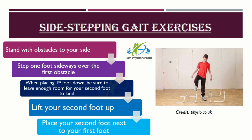Here's how to perform side-stepping gait exercises. Stand with obstacles to the side. Step one foot sideways over the first obstacle, being sure to raise your knee up high. When placing the first foot down on the other side of the obstacle, be sure to leave enough room for the second foot to land. Lift the second foot up with a high knee and place the second foot next to the first foot. Repeat over all the obstacles.